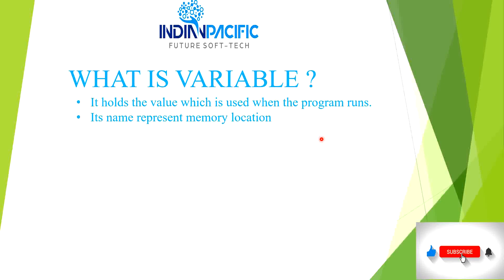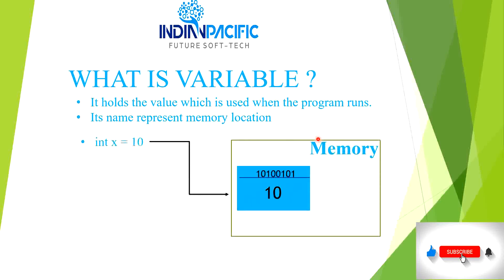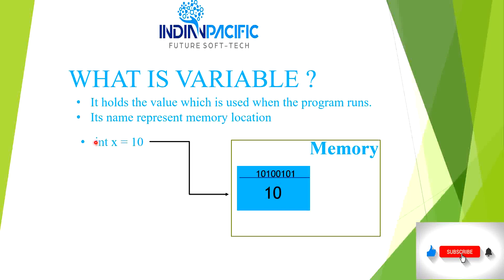Basically, a variable represents a memory location. Let's define one simple variable and understand it. Here you can see I have defined one variable: integer X is equal to 10. Here, integer is the data type — I will create a separate video so we can understand data types in depth. X is the variable name, and 10 is the value held by the X variable. Whenever we define a variable like integer X equals 10, this value will be stored at a particular memory location. From the diagram, we can see that 10 is stored at memory address 10100101.